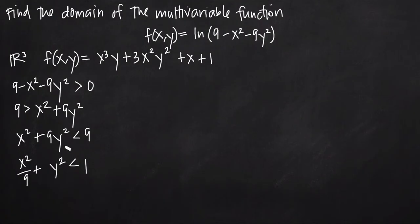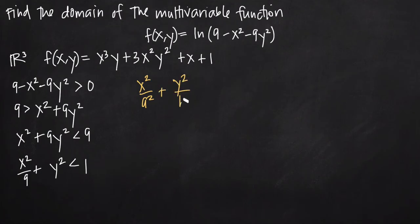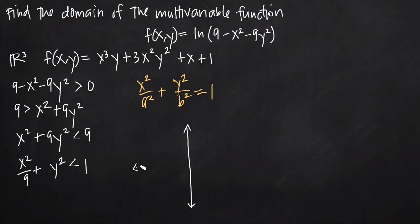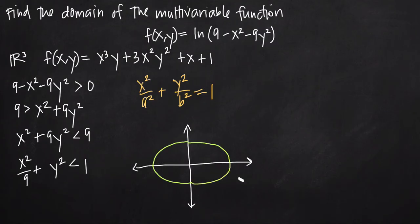At this point we should be able to see that we have an inequality in the standard form of a wide ellipse. The standard form of a wide ellipse is x squared over a squared plus y squared over b squared equals 1. When we have that standard form, our ellipse on a two-dimensional coordinate system is a wide ellipse centered at the origin.